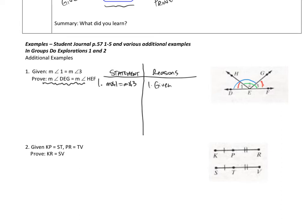This last statement should be my proof — where I want to end up. Now let's see what we have in between. If I add up what angle DEG is, it's made up of angle 1 plus angle 2. So I'll write: the measure of angle DEG equals the measure of angle 1 plus the measure of angle 2. This was the angle addition postulate.